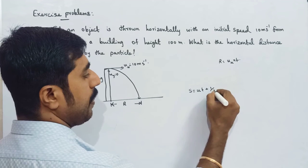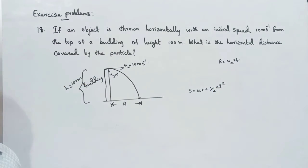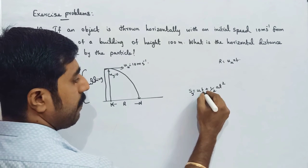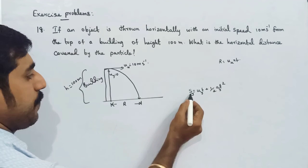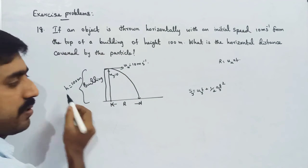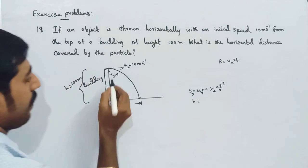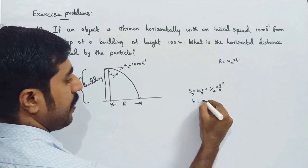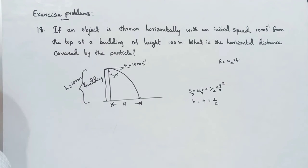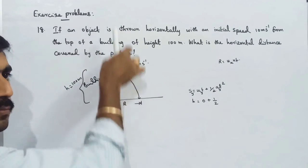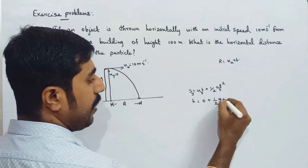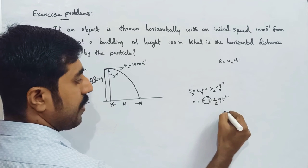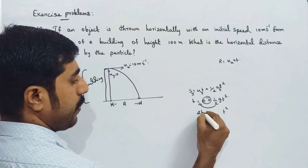The displacement formula is S = ut + ½at². For the vertical (Y axis) direction: Sy equals Uy·t + ½·ay·t². The vertical initial speed is 0, and the acceleration is g (acceleration due to gravity). So H = ½·g·t², which gives t² = 2H/g, therefore t = √(2H/g).